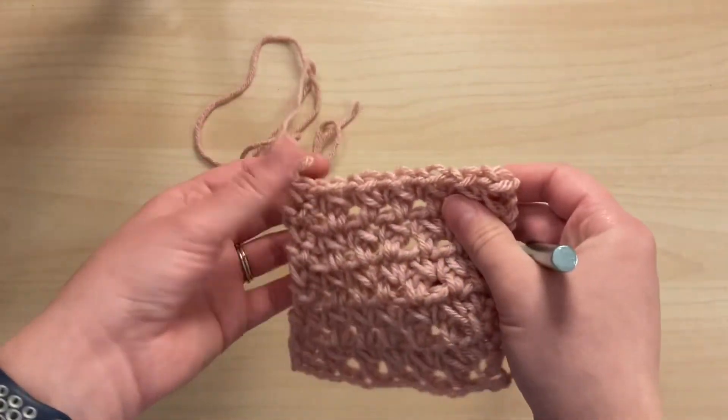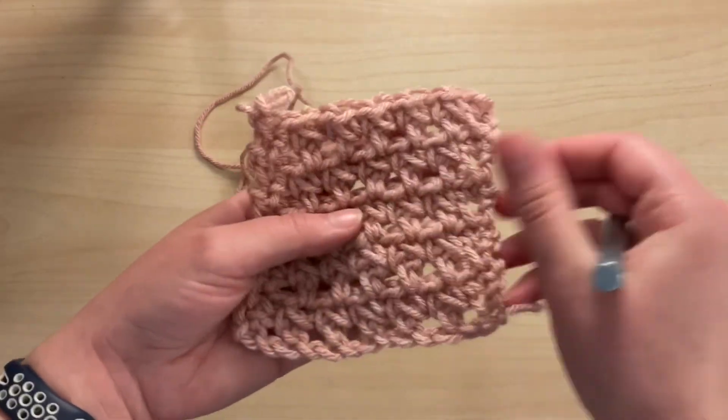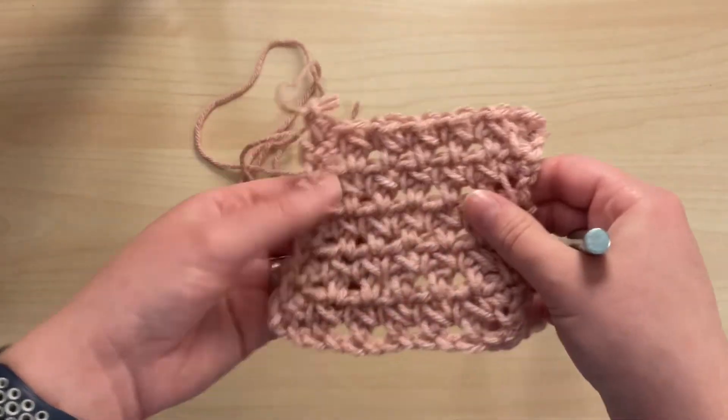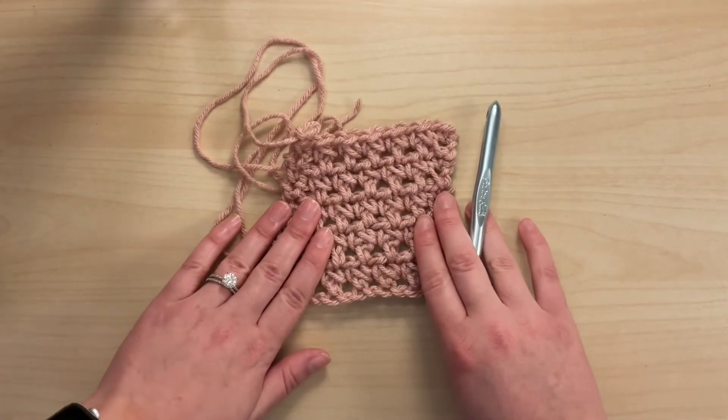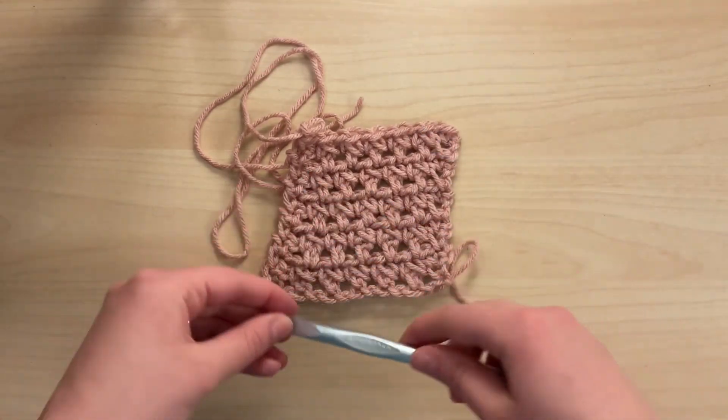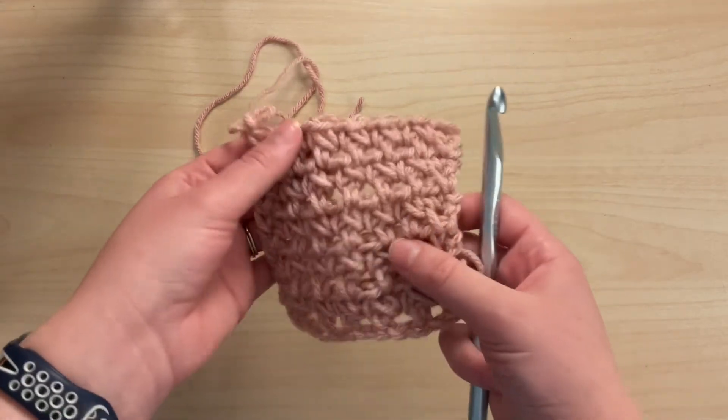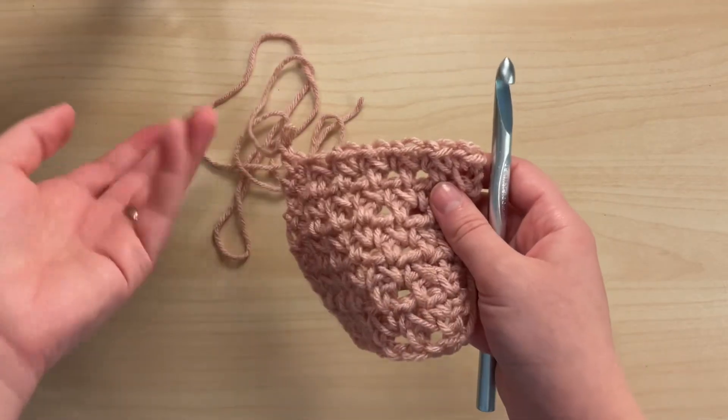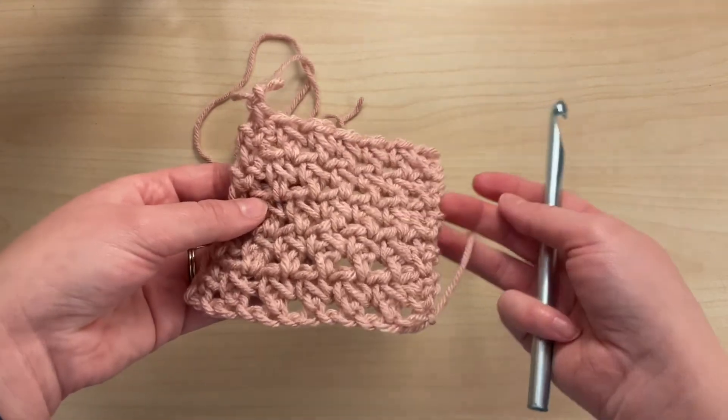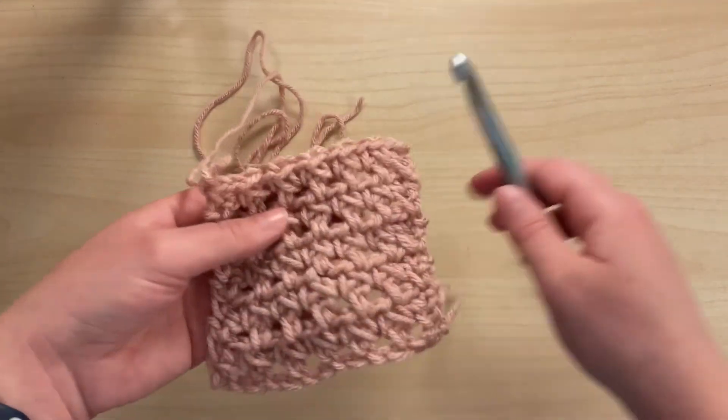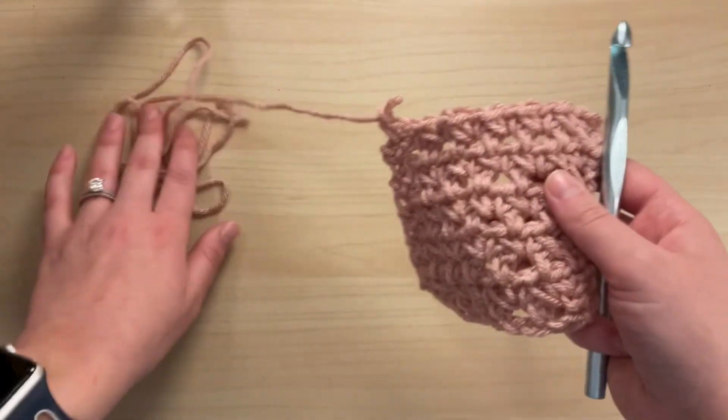Then you'll fasten off, weave in all your ends, and make four little tassels. I'll link Sorella's tassel tutorial in the link below because that's how I made my tassels every time, except the only difference is in her video she uses a book and I just used my phone to make the tassels. And I wrapped it around 50 times I think.